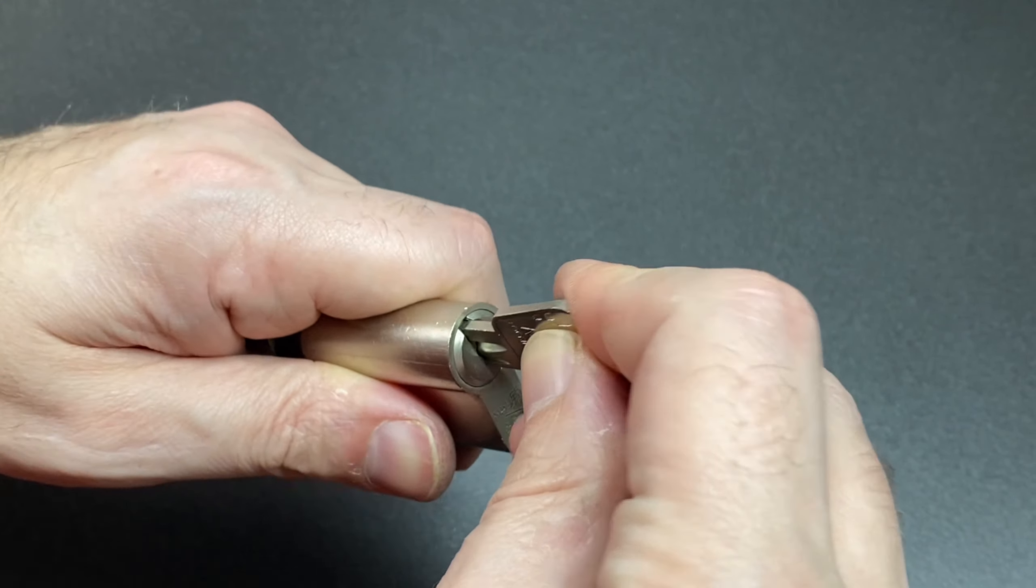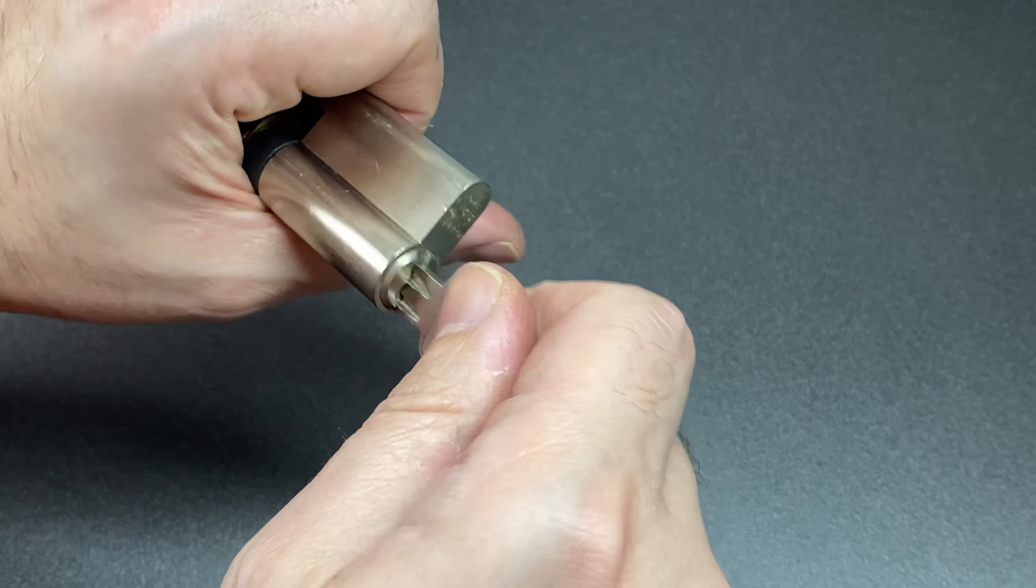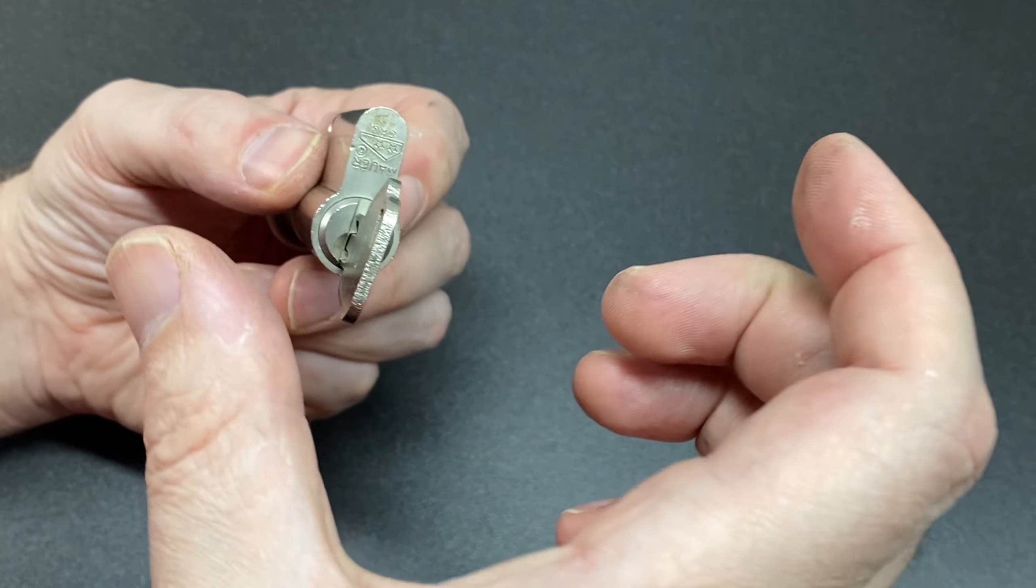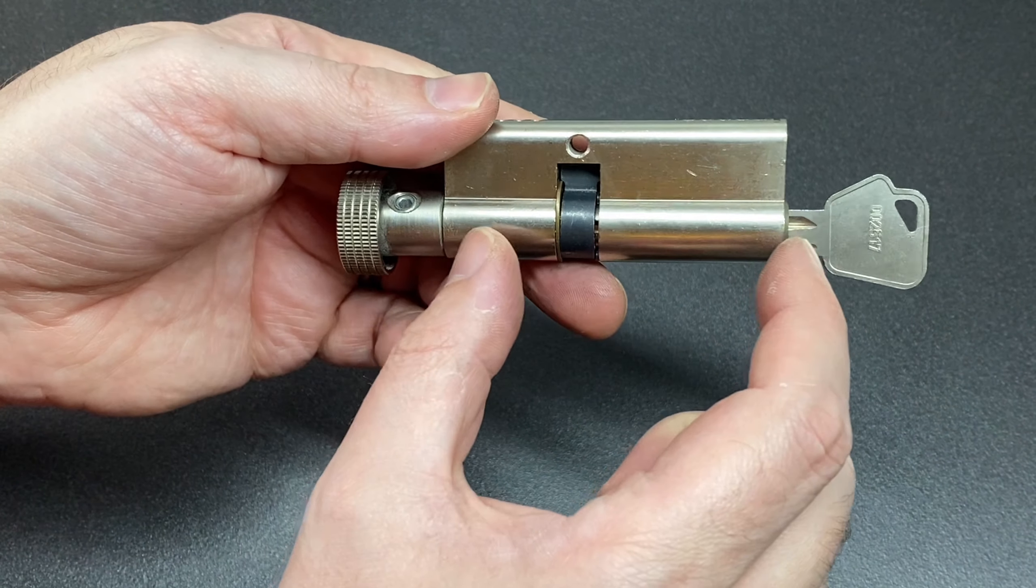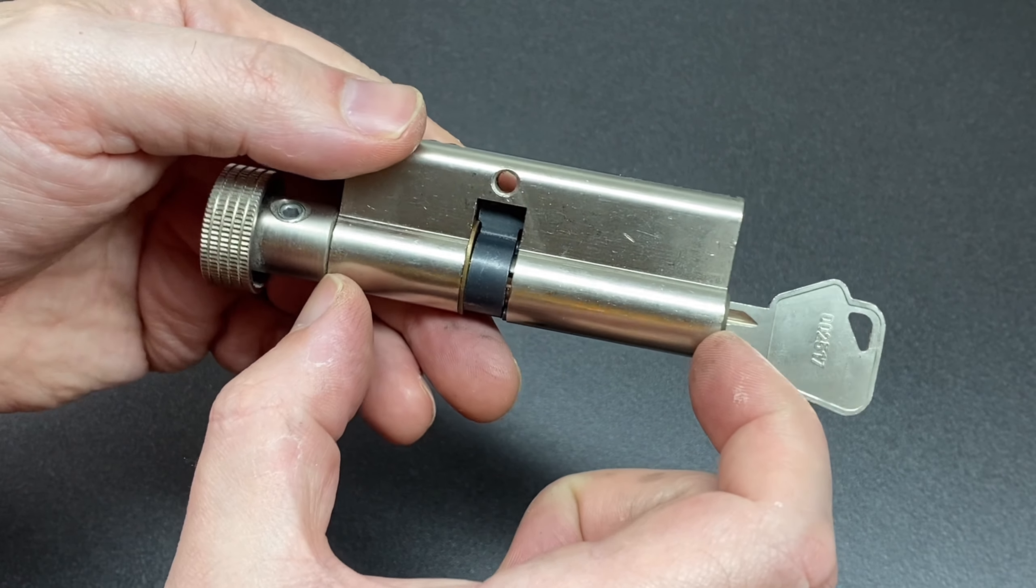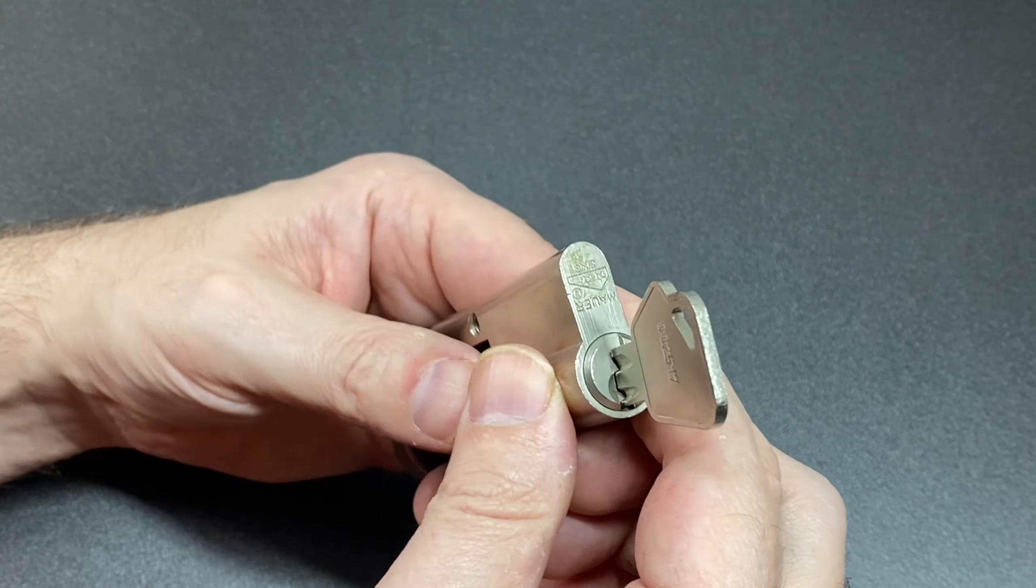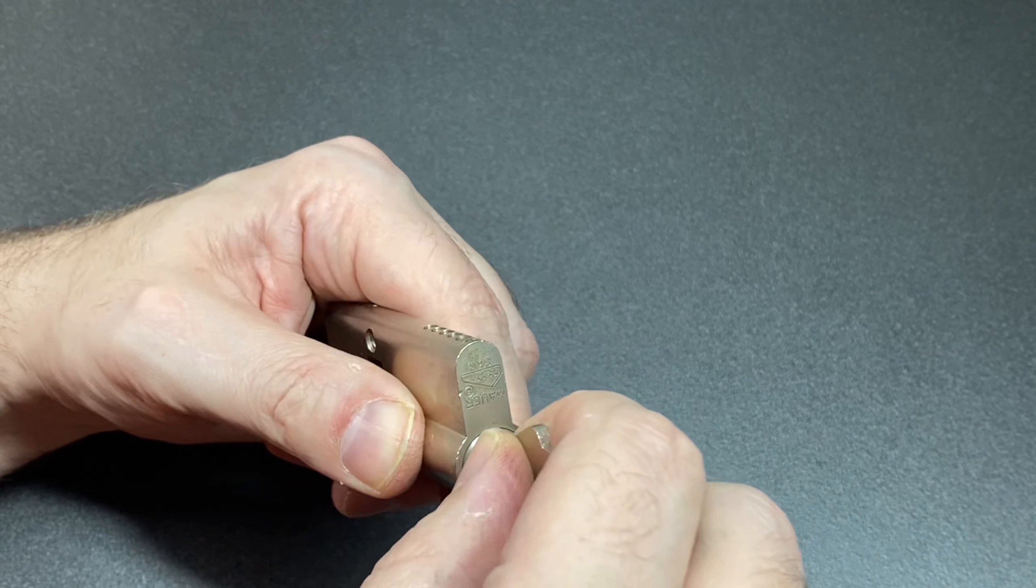Now Mauer do some really cool locks and very high security locks. They do that Mauer red line which is that dimple lock which has a key base which spans both sides of the Euro cylinder. It's very cool. This one is one of their lower security locks.